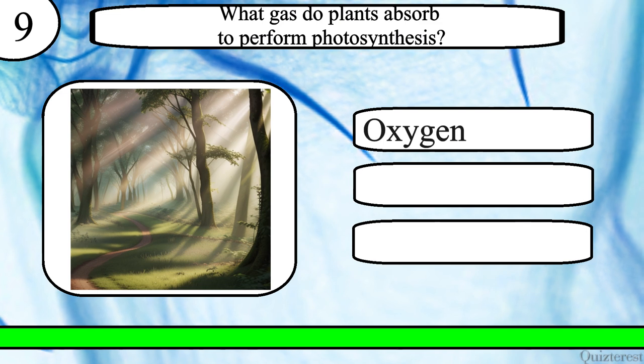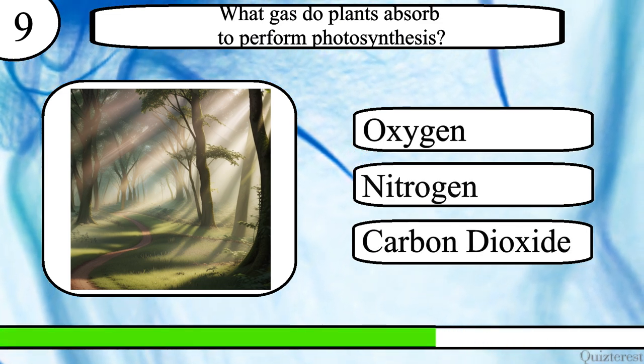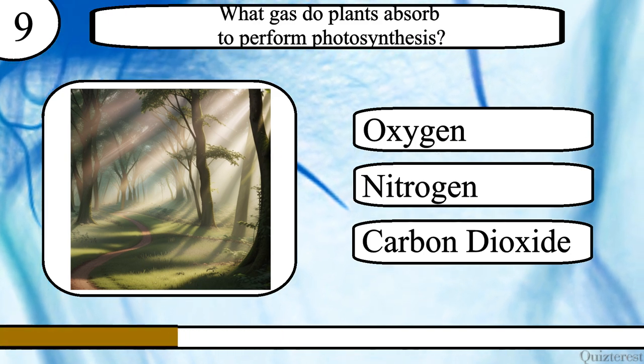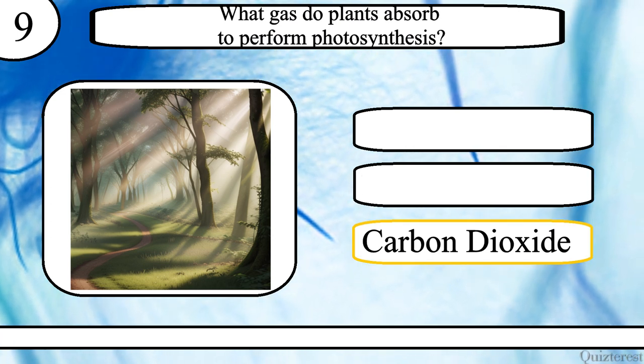Question 9. What gas do plants absorb to perform photosynthesis? Oxygen, nitrogen or carbon dioxide? The correct answer is carbon dioxide.